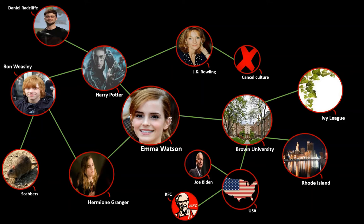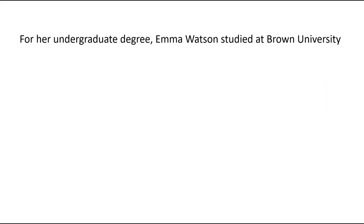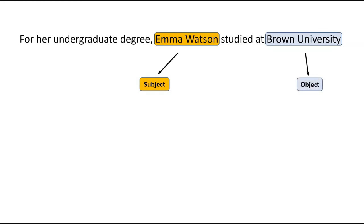Let's look at an example sentence to see how automated approaches build a knowledge graph. The sentence is: 'For her undergraduate degree, Emma Watson studied at Brown University.' Emma Watson is the subject of the sentence, while Brown University is the object. Generally speaking, the subject does something to the object, and the verb connecting them is called the predicate, which we interpret as the relationship between the subject and object — i.e., the entities.